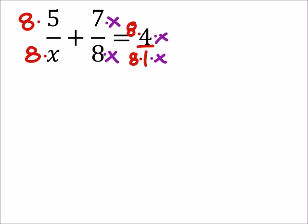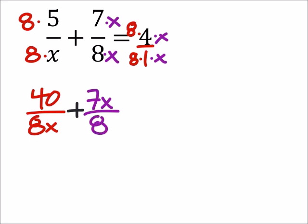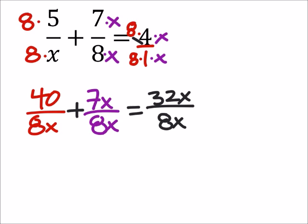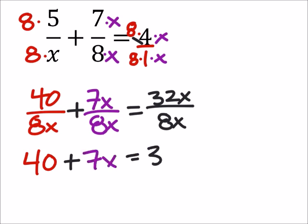So right here, eight times five is forty, over eight-x, plus seven-x over eight-x, and this would equal eight times four is thirty-two, so we've got thirty-two-x over eight-x. You see how we have those common denominators — since we have common denominators, we can just ignore all the denominators. So we get forty plus seven-x equals thirty-two-x.